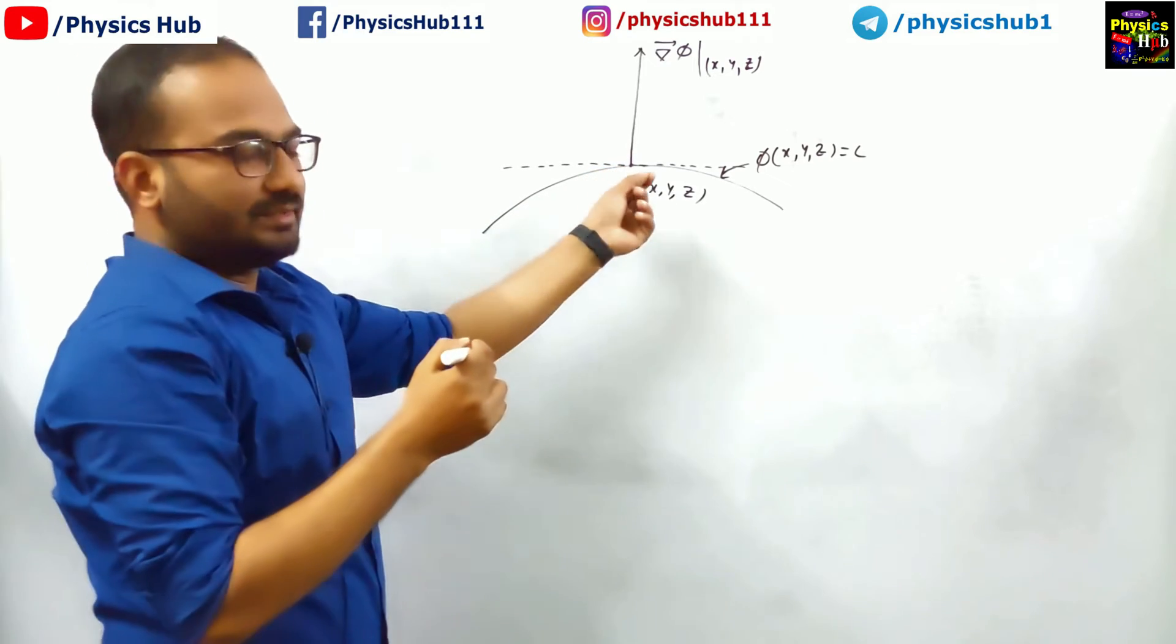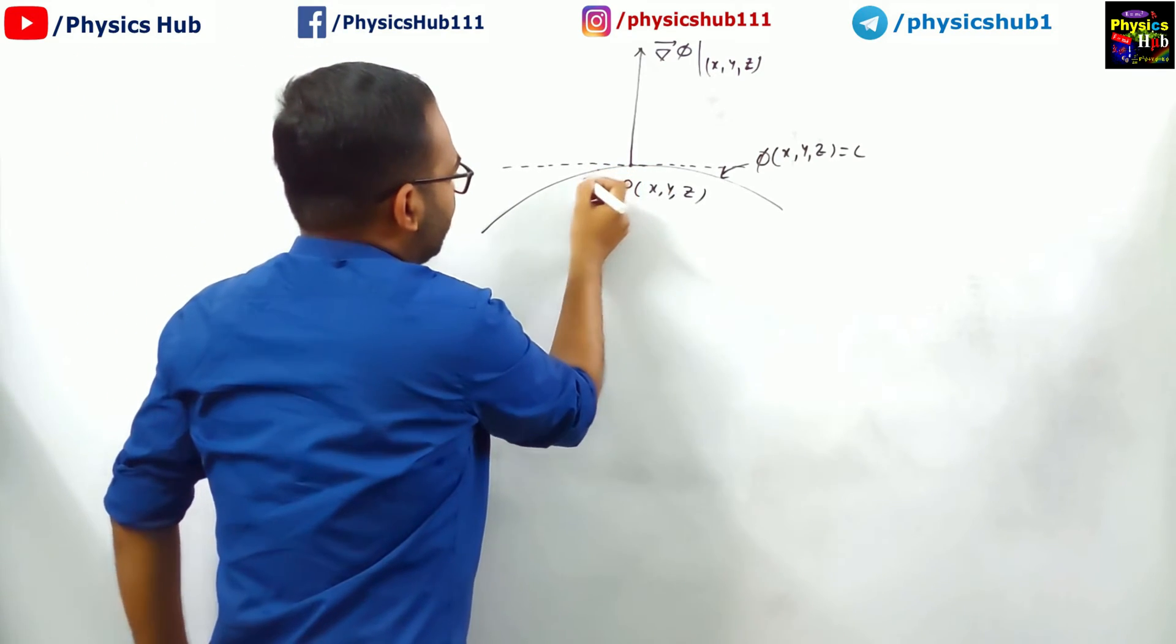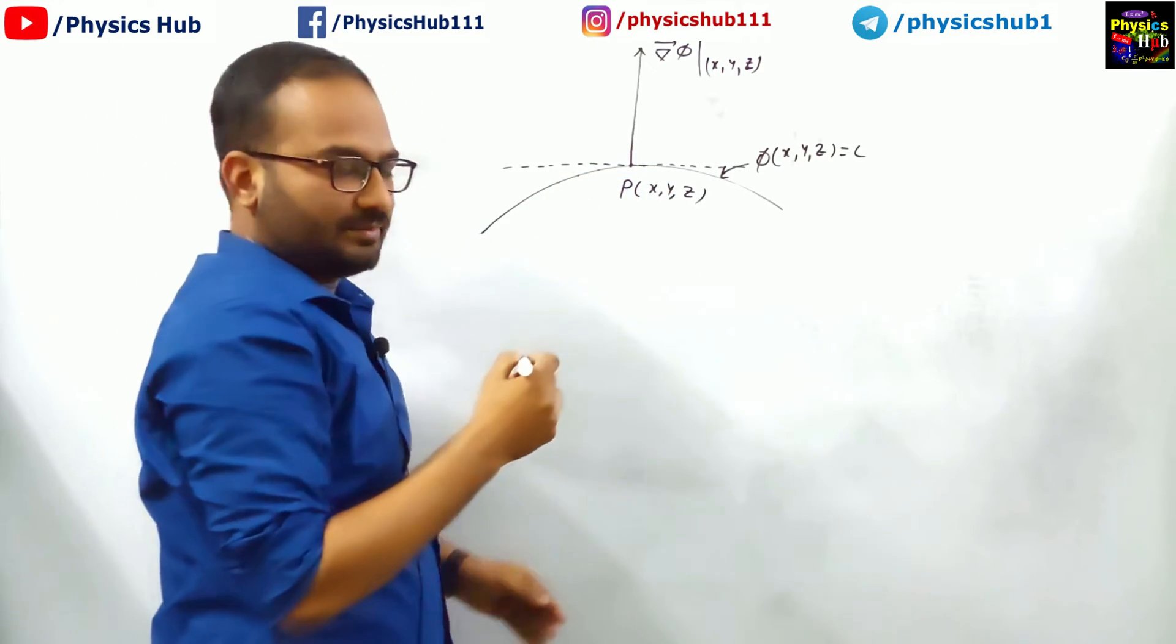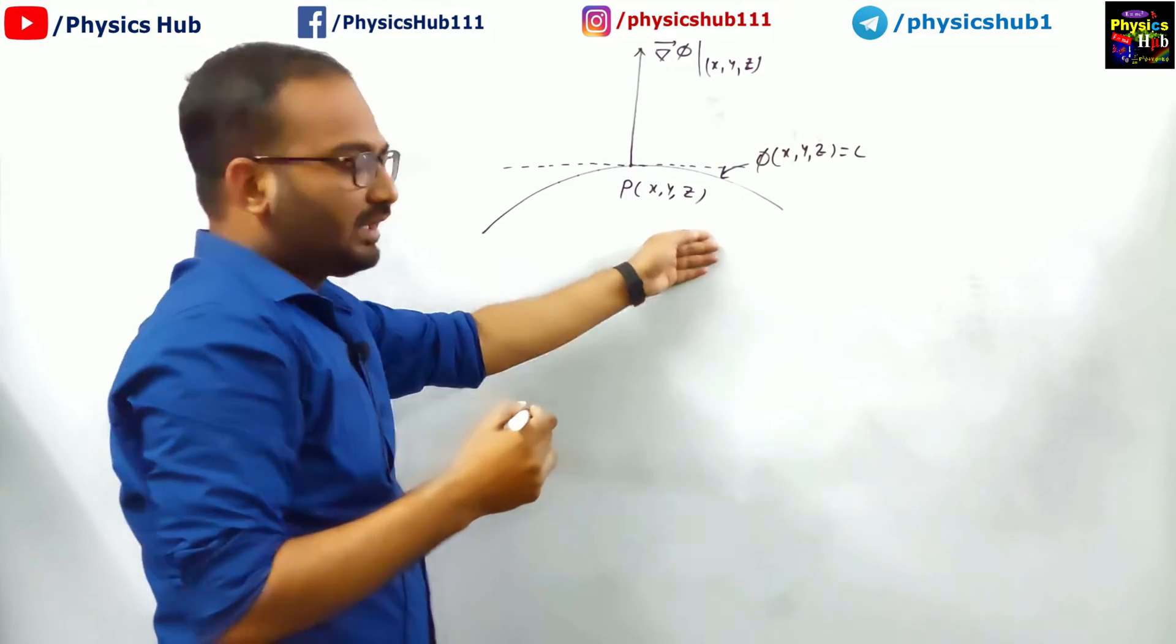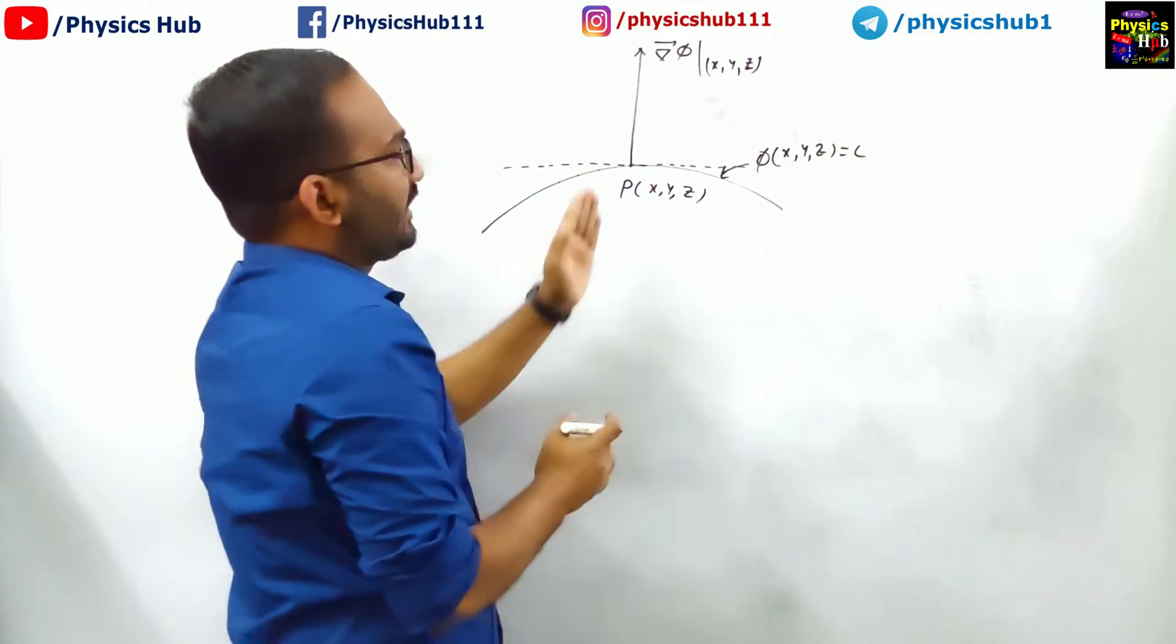You can vary the point instead of this. The point may be some other point depending on the coordinates of x, y, z, and you can draw grad phi there.